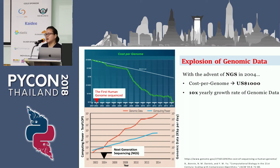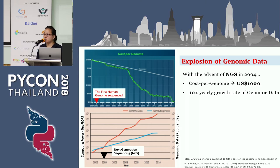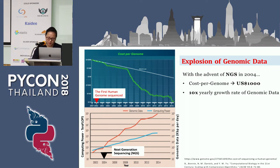We are seeing a 10 times yearly growth rate of genomic data. So that is the first evidence — we have an explosion of genomic data.